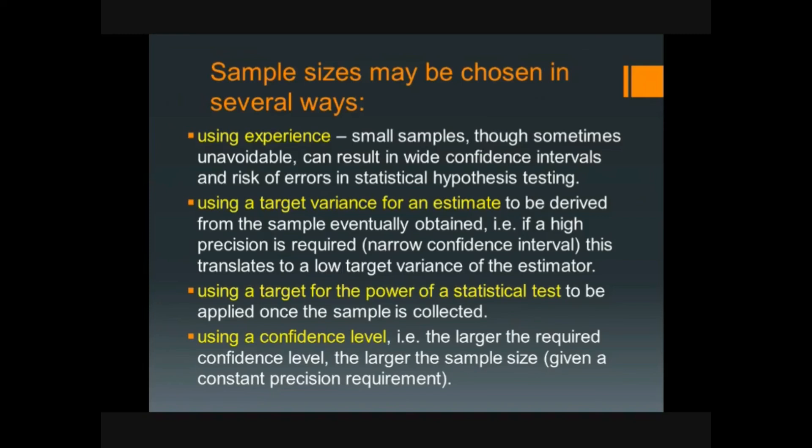Second is using a target variance for an estimate, to be derived from the sample eventually obtained. When high precision is required, this translates to a low target variance of the estimator.